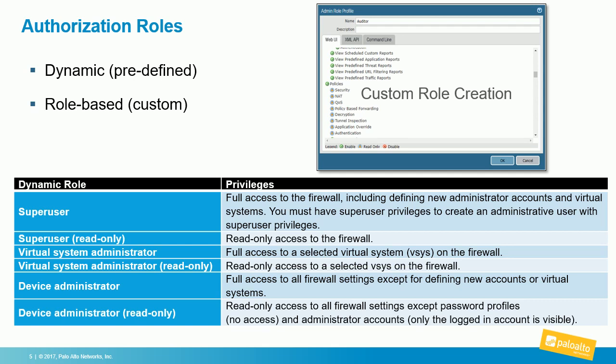Before we get into a demonstration, we need to talk about roles. There are two different types of roles, and roles are how Palo Alto Networks provides admin authorization — what is this administrator enabled to do once they've authenticated. The dynamic roles are predefined and come with PanOS. Or you can create your own custom role-based roles, where you click Add, give the role a name, and configure permissions depending on which interface you want that role to have access to.